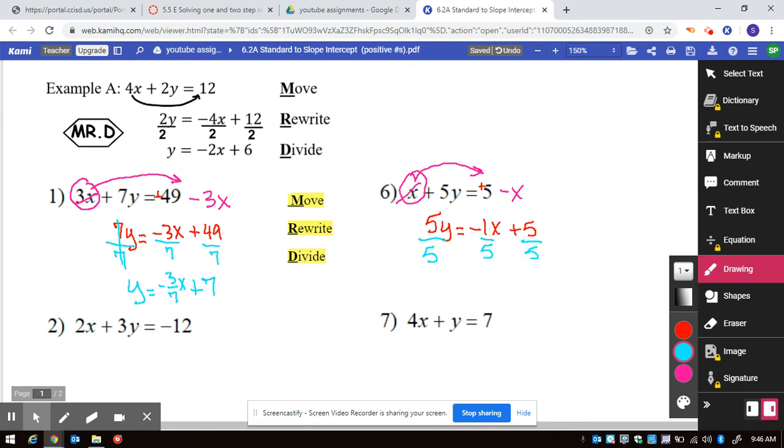So we, Mr. D, we move, rewrite, divide. So 5 divided by 5 is 1y is equal to negative 1 over 5x. That's a fraction that does not reduce without being a decimal, plus 5 divided by 5 is 1.